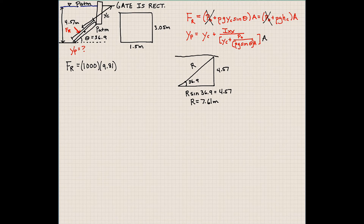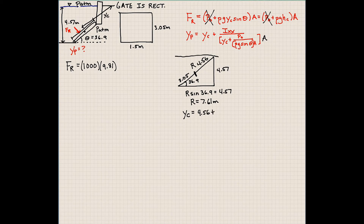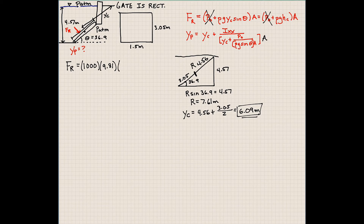So what is Y sub C? We know the height of the gate is 3.05 meters, which means the distance from the water surface to the top of the gate has to be 4.56 meters. Y sub C is going to be 4.56 plus 3.05 divided by 2, which comes out to be 6.09 meters. We just had to use some geometry to determine where Y sub C is. So Y sub C is 6.09 meters.